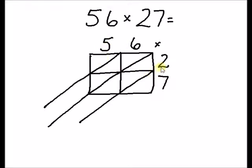We have 5 times 2 is 10 so we write the 1 and the 0. Next we do 6 times 2 is 12.